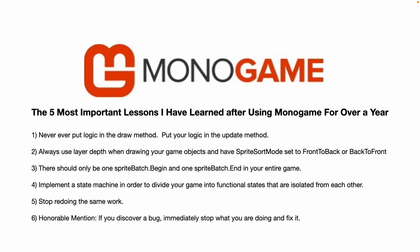Number six — I know I said five lessons, but consider this one an honorable mention. This lesson I knew before learning Monogame, however it applies to video game programming as much as any other type of programming. If you discover a bug, immediately stop what you were doing and fix it. The worst thing you can do is have a post-it note with bugs that you need to fix later. If you attempt to fix it right away you'll remember all the recent changes you made and it will be much easier to debug. In addition, your future code won't be written on top of broken code.